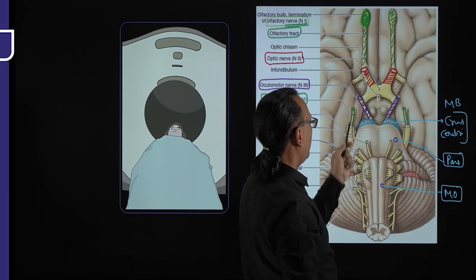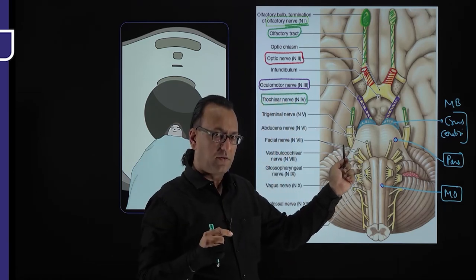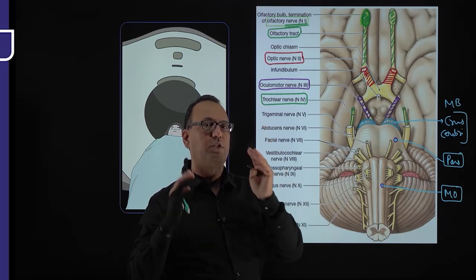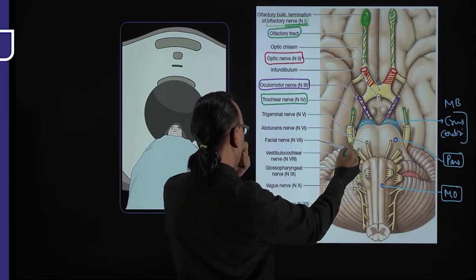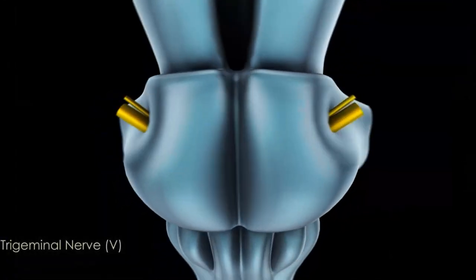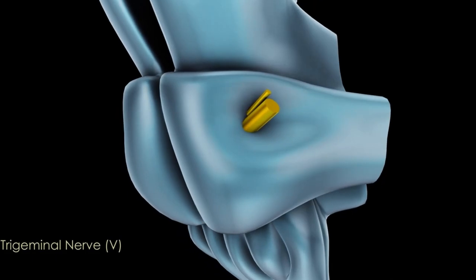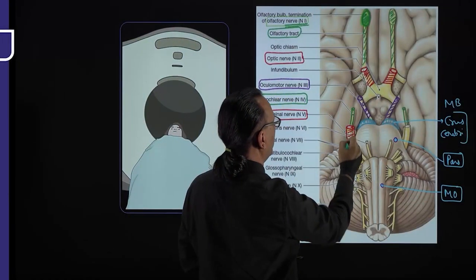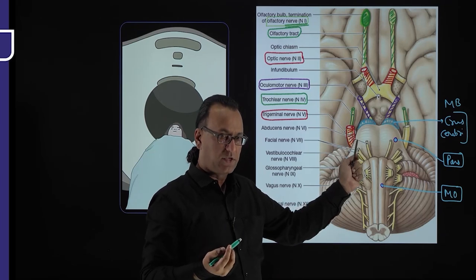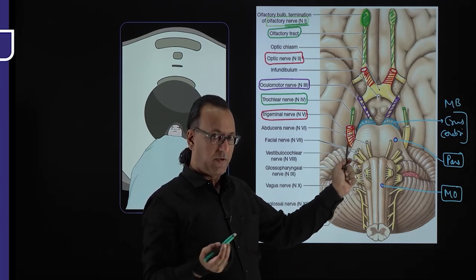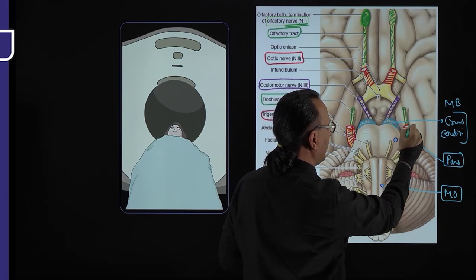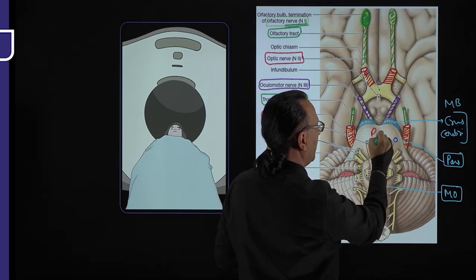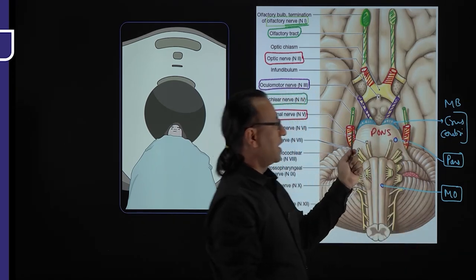The thinnest cranial nerve is the trochlear nerve, and it is very close to the thickest cranial nerve, the trigeminal nerve. The trigeminal nerve is three nerves in one, carrying many axons, making it the thickest cranial nerve. It has one motor and one sensory component running together, arising from the pons. So nerves 3 and 4 come from the midbrain, while nerve 5 comes from the pons.